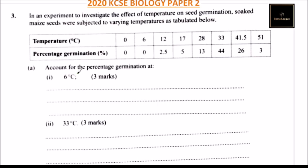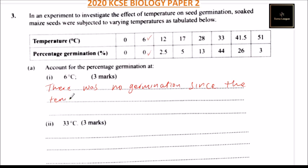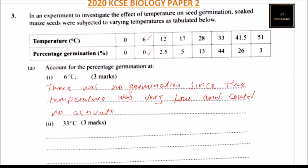Part of this question asks us to account for the percentage germination at six degrees centigrade. The germination was zero. We can say there was no germination since the temperature was very low and could not activate the germination enzymes.